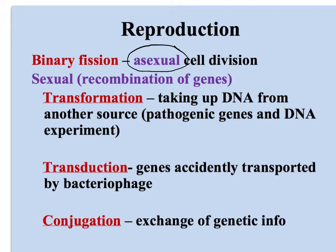Bacteria can also sexually reproduce, and by sexually reproduce I mean they recombine — there's a recombination of their genes, so the genetic material changes. This can be done in one of three ways. So one: transformation — this is taking up DNA from another source.